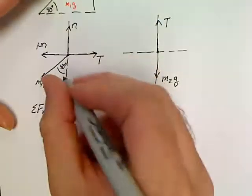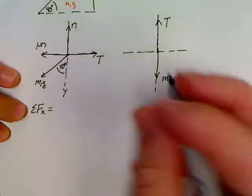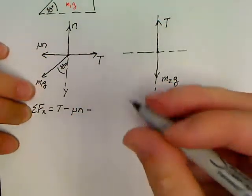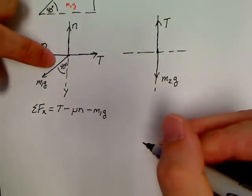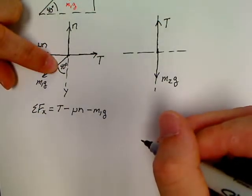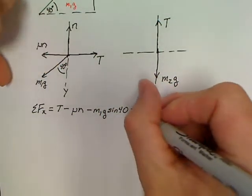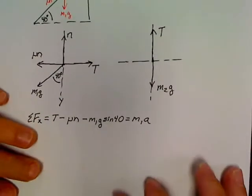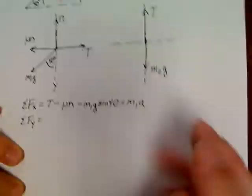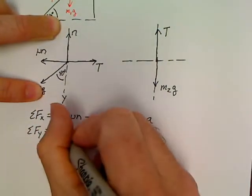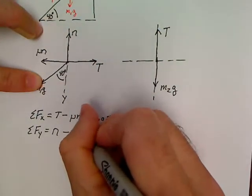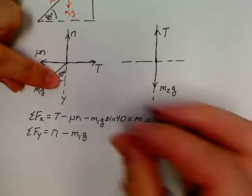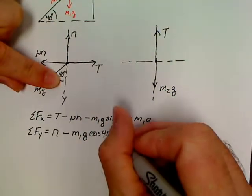Sum of the forces x would be equal to T minus mu N minus M1G. Now, we could write cosine of 50 or sine of 40. I'm just going to write M1G sine of 40. And all this will be equal to M1A because ultimately it is moving to the right, positive x in my picture. Sum of the forces y would be equal to N minus M1G. And normally on the y, I'd use sine if I were off of this angle. So I could go sine 50 or cosine of 40. That's equal to 0.